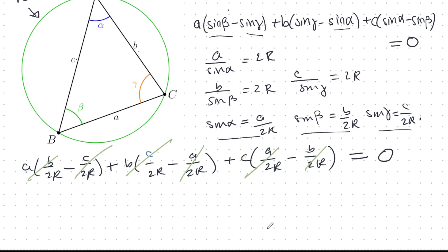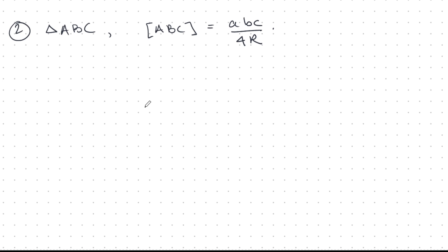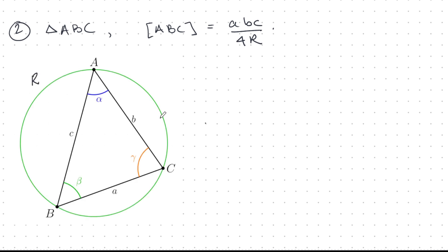That identity is totally amazing and true for every single triangle. Problem two is a beautiful formula for the area of a triangle involving R: for any triangle, the area equals the product of the sides, abc, divided by 4R, where R is the radius of the circumscribing circle. That's an extraordinary formula — how do we prove it?